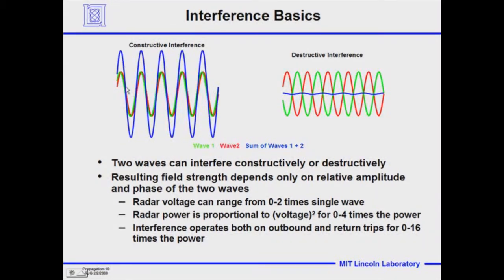If we shifted these two waves by one half of a wavelength, we see an example where the yellow and the red are out of phase by 180 degrees — exactly a half wavelength apart. The positive part of wave two adds with wave one and they subtract out. The positive part of wave one adds with the negative part of wave two, and we end up with destructive interference — essentially zero.